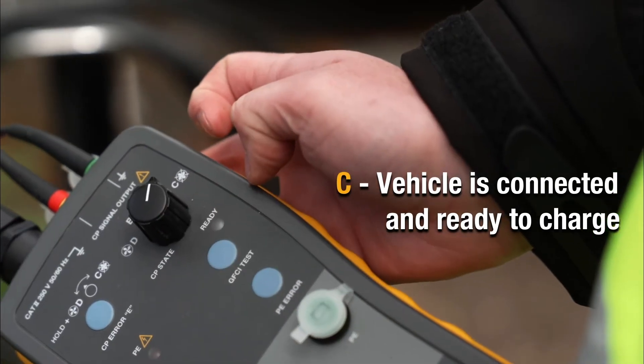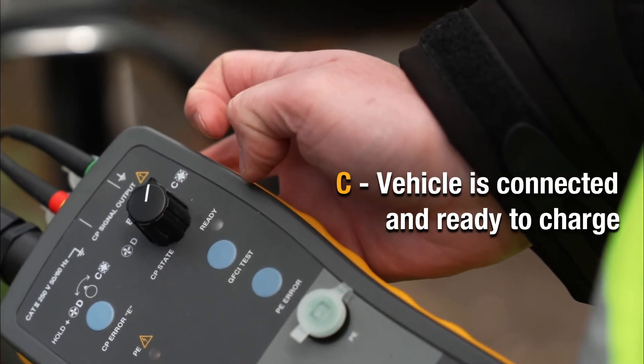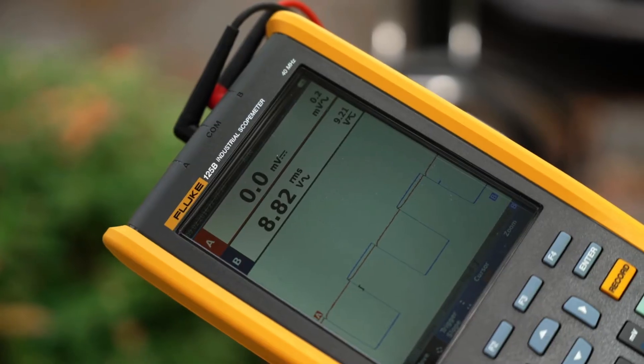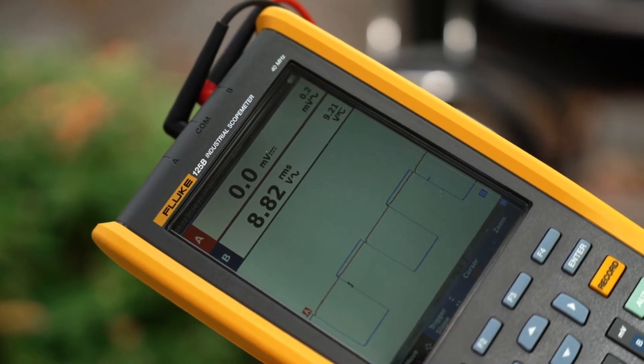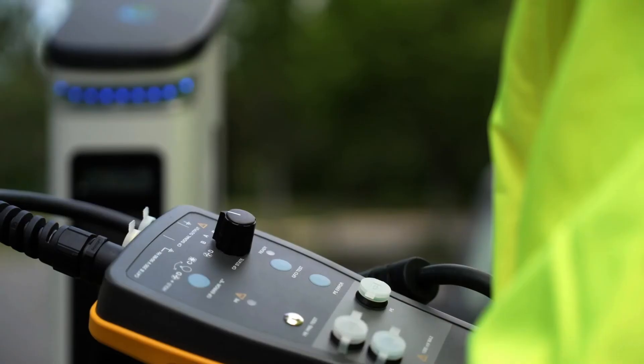Then switch the button to the C position to test the state where the vehicle is connected and ready to charge. Your scope meter should indicate negative 12 volts to positive 6 volts at 1 kHz frequency.